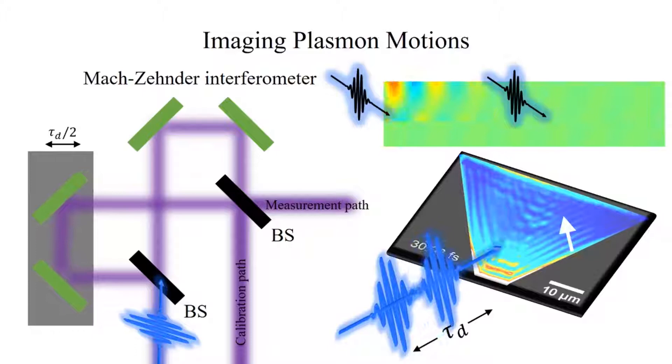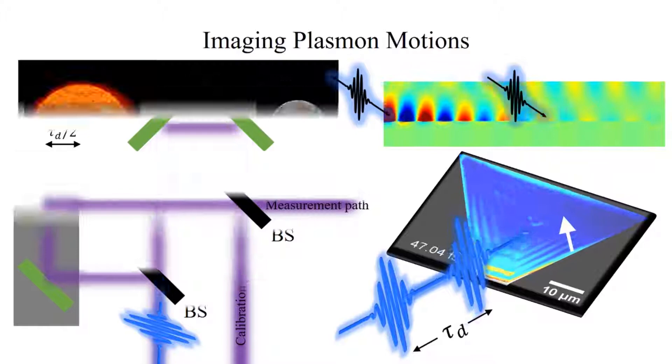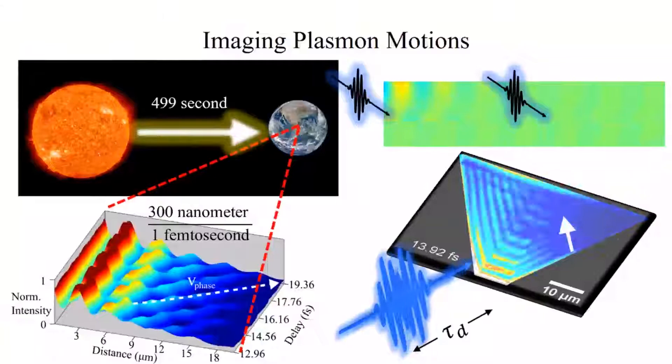Indeed, our movies show the fastest phenomena ever imaged. It takes light 499 seconds to travel from the Sun to the Earth, but in our microscope, we can capture as it propagates by 300 nanometers in each femtosecond.